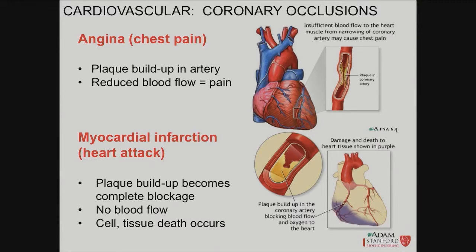Sometimes when the heart gets ischemic in points near the diaphragm, you get pain closer to that diaphragm area. The diaphragm has neural innervation from the cervical nerves — C3, C4, C5 keeps the diaphragm alive. So if that area gets irritated you're going to get referred pain to the back, shoulder, arm, jaw, and neck. It's referred pain, not direct blockage of arteries to those areas.